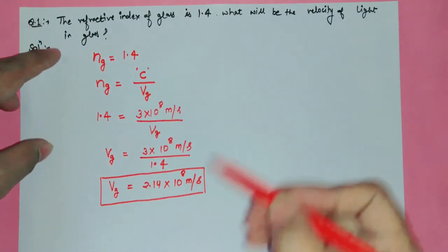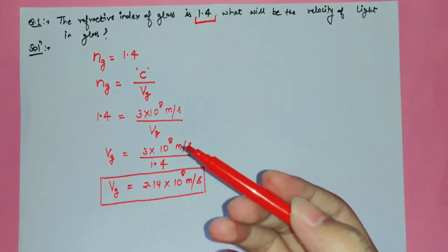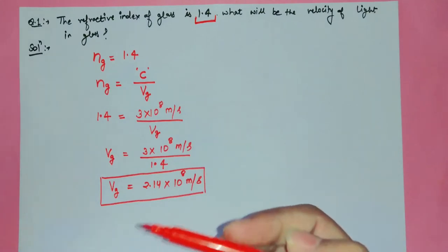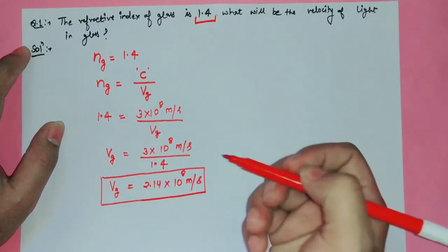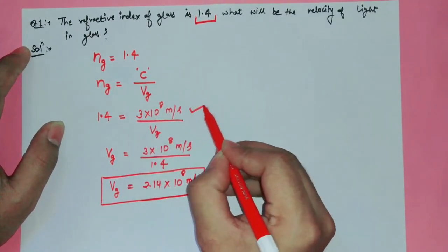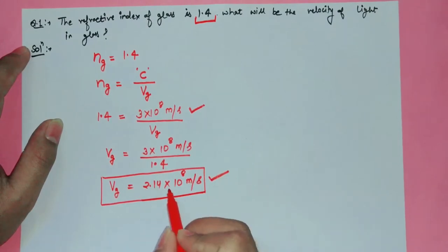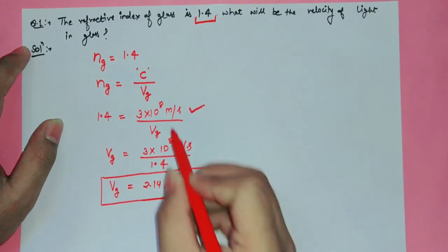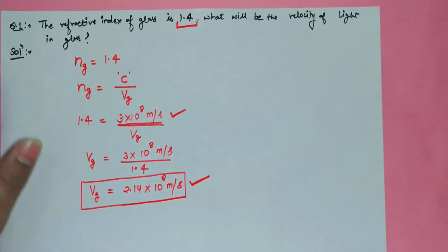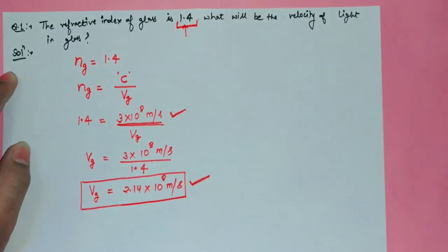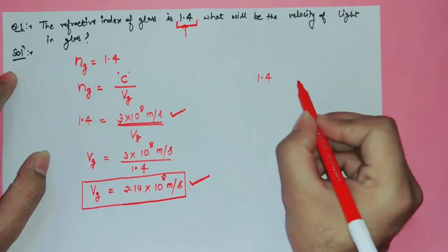We know that if the refractive index is greater than 1, the medium is denser, and in a denser medium the velocity of light is less. The velocity of light in air is 3×10⁸ m/s, whereas in glass it is 2.14×10⁸ m/s, which is less. This demonstrates the use of the refractive index: if it is given for any material, we can calculate the speed of light in that medium.